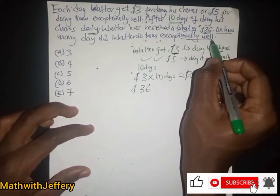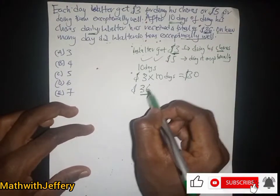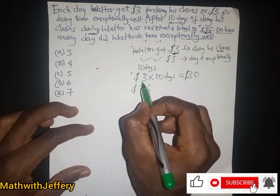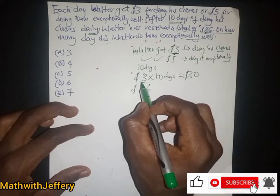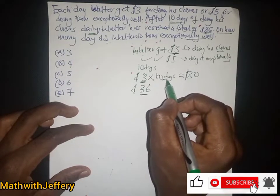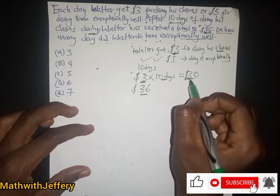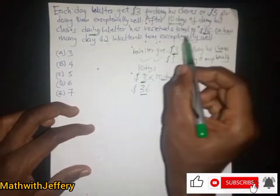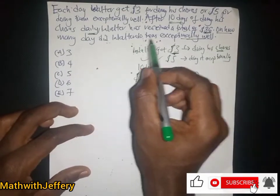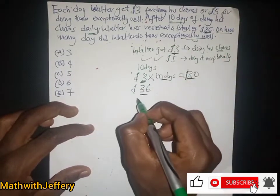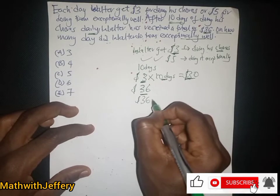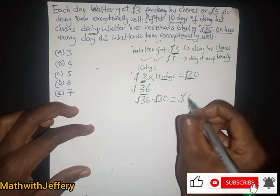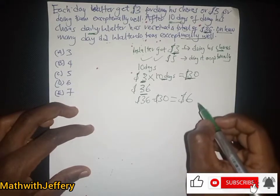If Water is receiving 36 dollars for 10 days, and on a normal day gets three dollars multiplied by 10 days, giving a total of 30 dollars, then in order to find the number of days done exceptionally well, it's just going to be 36 minus 30 dollars, which gives us six dollars.